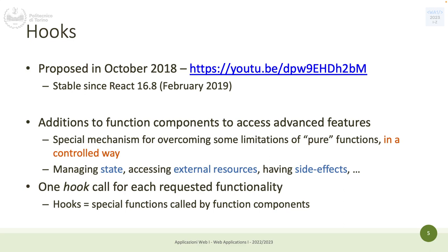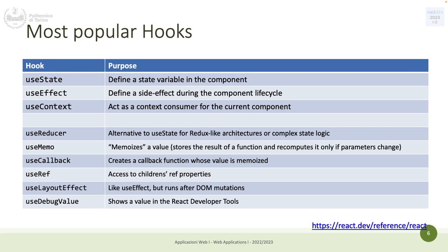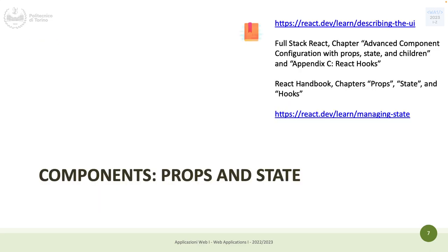There is one hook for each requested functionality. Hooks are special functions that function components can call. There are a bunch of hooks and during this course we are going to see the first three. Today the one we are interested in is the first one: the useState hook. useState is a function that allows you to define a state variable within a component. We'll also see useContext and useEffect.